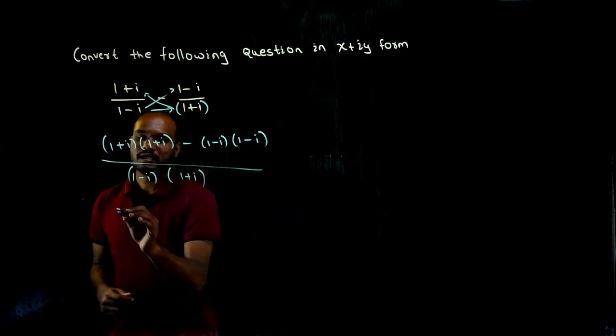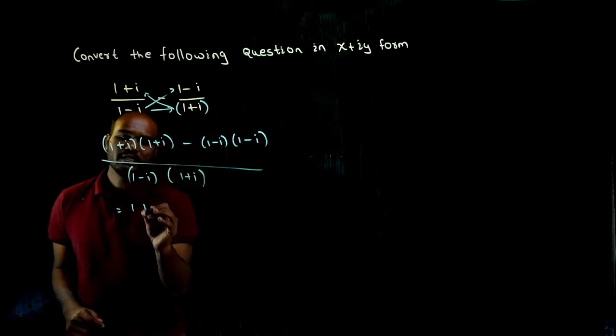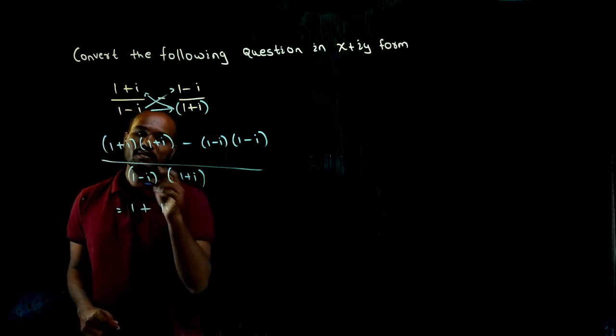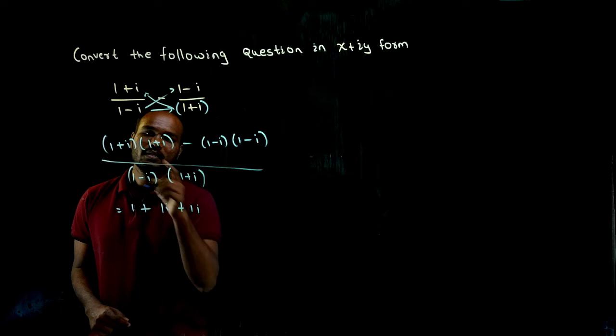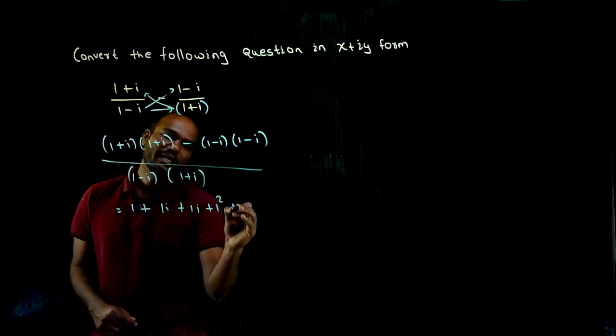1 minus i into 1 minus i divided by this into this, that is 1 minus i into 1 plus i, right? I can multiply 1 into 1 is 1, 1 plus i is 1i, 1i plus 1 is 1i, i into i is i square.